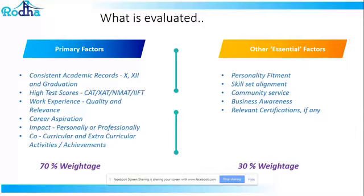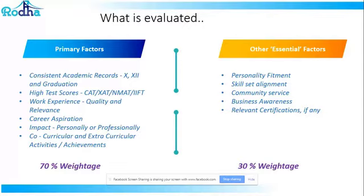Last but not least is what we commonly refer to as co-curricular and extracurricular activities. They want to see what you've done beyond academics — have you written any research papers, done case study competitions, taken part in competitions that need you to think as a problem solver? From an extracurricular standpoint, they're looking at people who have done different things: swimming, being a national-level athlete, or doing something at a national or regional level which stands apart from academic criteria. Extracurricular achievements are extremely crucial to segregate candidature, showing the versatility of the candidate.